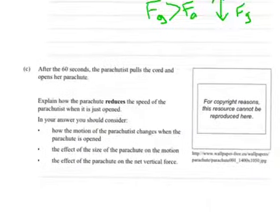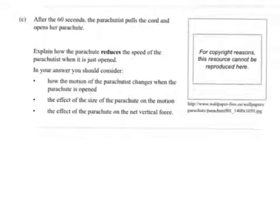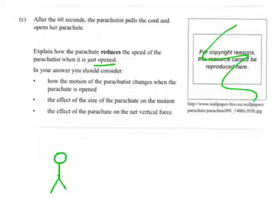Moving on to C, which is actually the last question in the section. After 60 seconds, the parachutist pulls the cord and opens her parachute. Explain how the parachute reduces the speed of the parachutist when it is just opened. In your answer, you should consider, you know what, I'm not even going to consider those things yet. We're just going to start. Okay, and again, we've got no picture, but we're probably going to have to draw a picture, so I'm going to go straight into it. Here's our parachutist. There's their pack, but this time their parachute has opened.